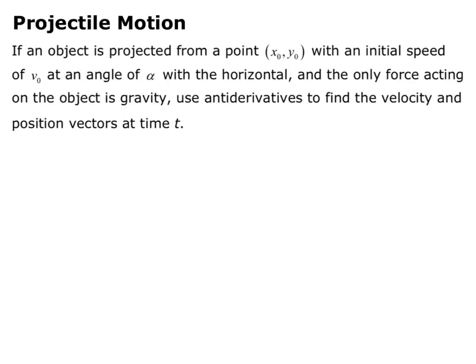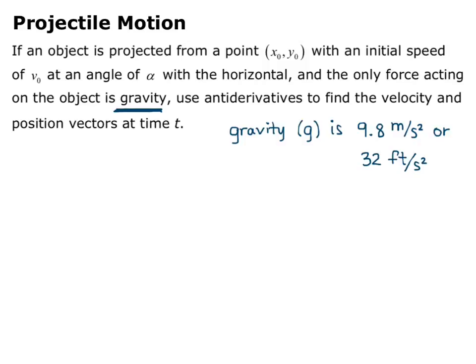Now let's discuss projectile motion in general. Sometimes all we're given is initial speed and a launch angle. If an object is projected from a point (x₀, y₀) with initial speed v₀ at angle α with the horizontal, and the only force acting is gravity — which is 9.8 m/s² or 32 ft/s² depending on units — use antiderivatives to find the velocity and position vectors at time t.